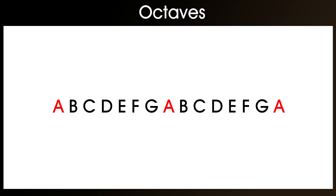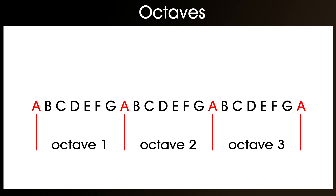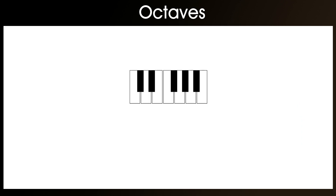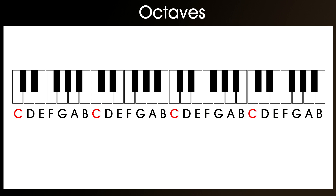This process of repeating the note names happens again and again according to the playable range of your instrument. Here you can see a three-octave range. For simplicity, I've used these examples going from A to A, however more commonly you tend to see it going from C to C. If you look at the piano, for example, you'll notice how it starts at C in the vast majority of cases. On a piano keyboard you can also see how the pattern repeats itself every eighth note, if we ignore the black notes, which are the sharps and flats.